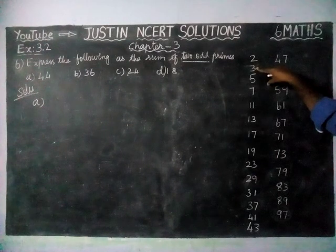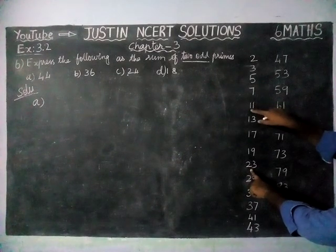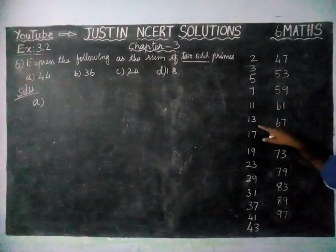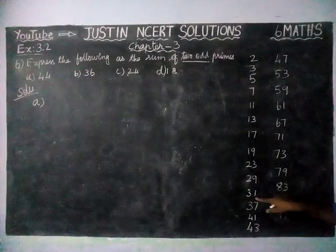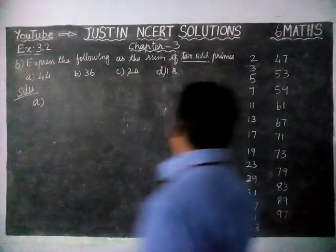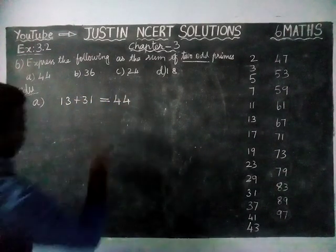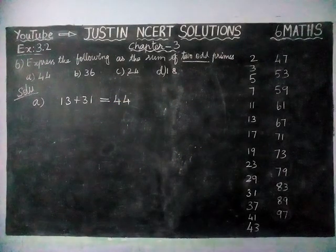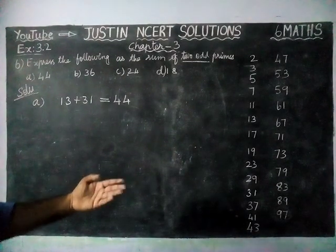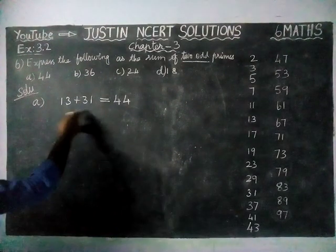We will check it from here. 11 plus 33 — is it possible? We need 44. So, 13 and 31: 1+3 is 4, 3+1 is 4, so we can take it. 13 plus 31 is equal to 44. There may be other pairs as well — you can choose any two prime numbers to get 44 as the answer.